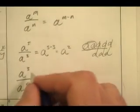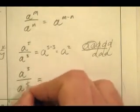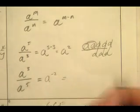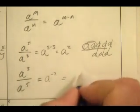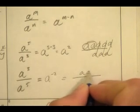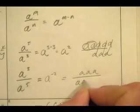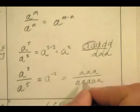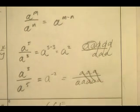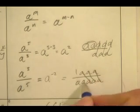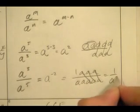Also, the other way, a to the third over a to the fifth is 3 minus 5. It's a to the negative 2. Similarly, in a similar fashion, if I have a, a, a over a, a, a, a, a, those are all ones, and I get 1 over a squared, which is the same thing as a to the negative 2. Alright, very nice. Let's keep moving.